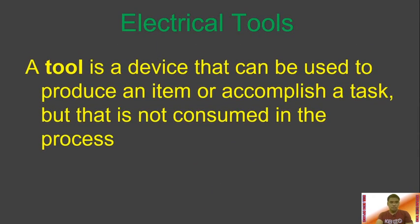First, we have the definition of a tool. A tool is a device that can be used to produce an item or accomplish a task but that is not consumed in the process. Meaning, we will use a tool to do work, to accomplish a task or to do a job, but after the job has been done, the tool will not be consumed. We will have the same number of tools that we have until we finish the work.